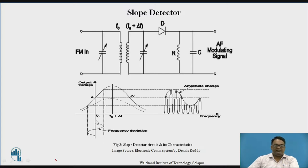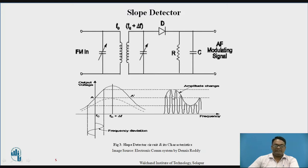The FM frequency deviation is shown here — it generally lies between Fc minus delta-F and Fc plus delta-F, and the most useful range is between Fc and Fc plus delta-F. This shows the amplitude variations — the AM change — whenever the signal passes through the circuit, and the output is taken across the RC filter.